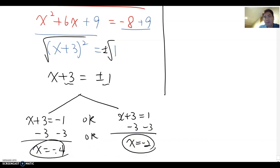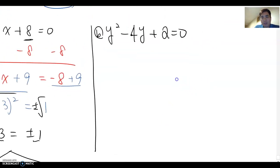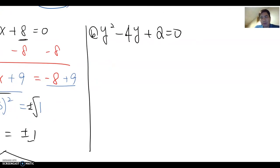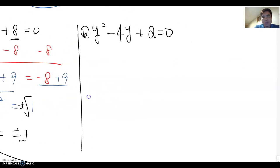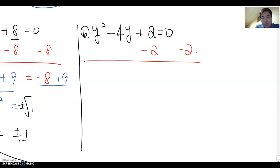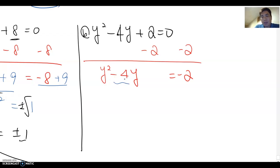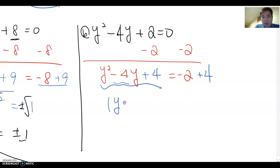Now look at another question: y² - 4y + 2 = 0. I'm going to do the exact same steps. First remove the constant from the left side so only y² and the y term remain: y² - 4y = -2. Same property: half of -4 is -2, and (-2)² = 4, so add 4 to both sides. Factoring the left gives (y-2)².